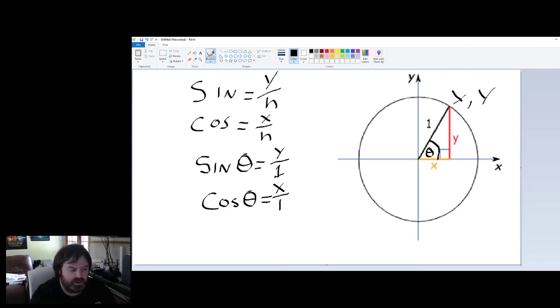Similarly cos theta is going to be the adjacent which is x over the hypotenuse which is 1. So cos theta is going to be x. So we've proven that sine theta is y and cos theta is x. Therefore the point x equals cos theta sin theta and that there is our proof. Happy days.